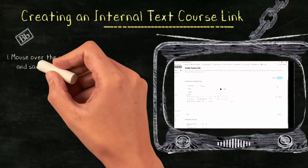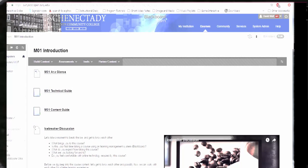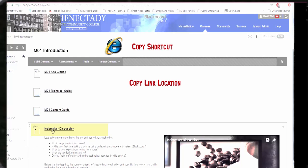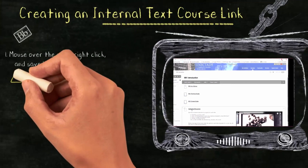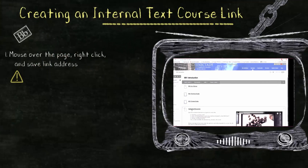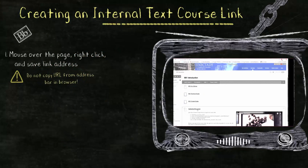First, go to the area you want to link to, but do not enter the file. Instead, put your mouse over the page name. This is already a text link. Right click on the link and select copy shortcut if you are using Internet Explorer, copy link location in Firefox, and copy link address in Chrome. Note, do not copy the URL from the address bar above in your browser. This may include information that will not work when others select the link.